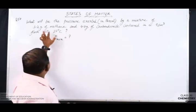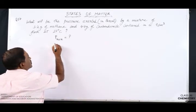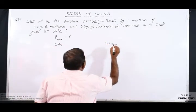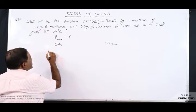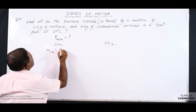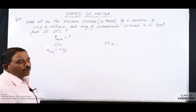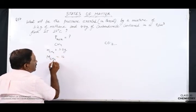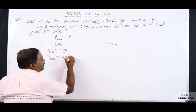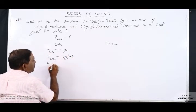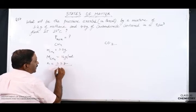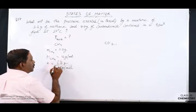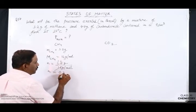We have two gases: methane gas and carbon dioxide gas. For methane gas, the mass is 3.2 grams, and the molar mass of methane is 16 grams per mole — 12 from carbon and 4 from hydrogen. So the number of moles will be 3.2 grams divided by 16 grams per mole, which gives us 0.2 moles.